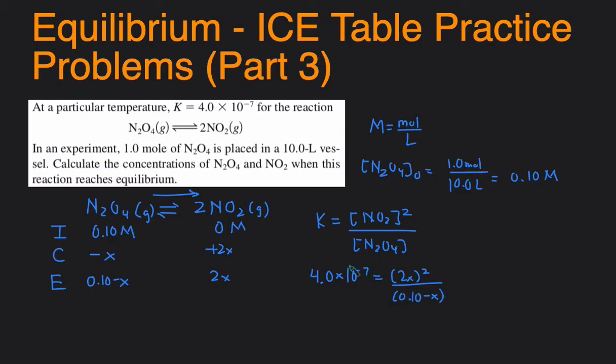Here our K value is really small. If the K value is small, typically the cutoff is around negative 4, negative 5, or smaller, then you can assume that this reaction barely happened. So the x value is going to be so small in comparison to the number next to it, that we can just get rid of this, and that will simplify our calculation.